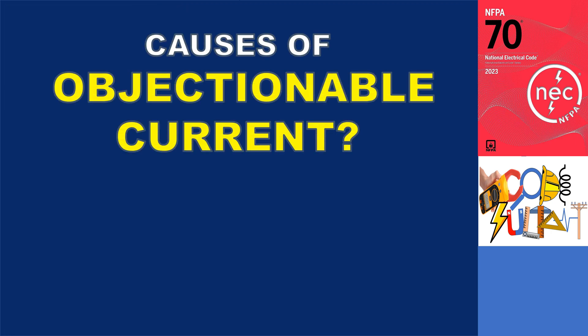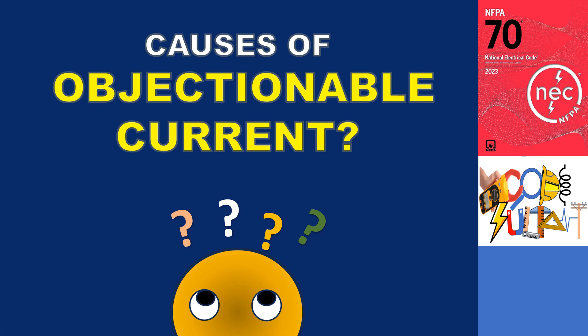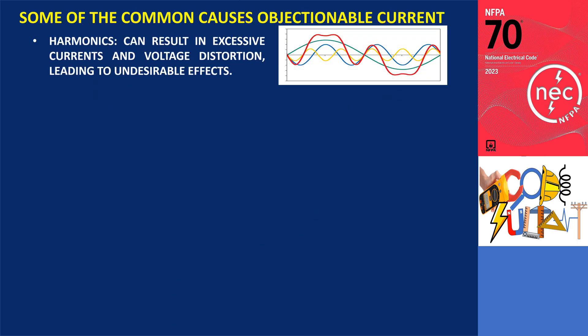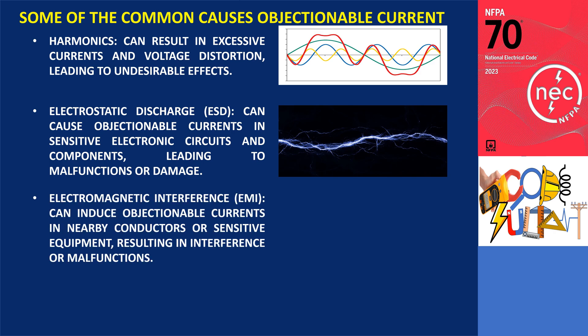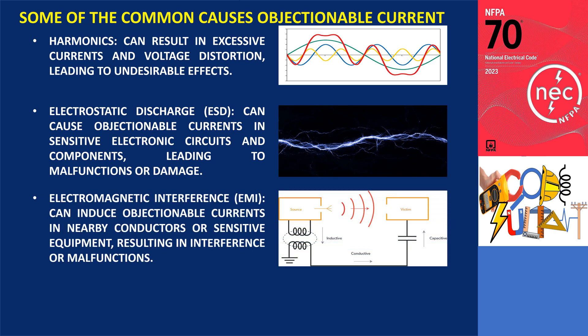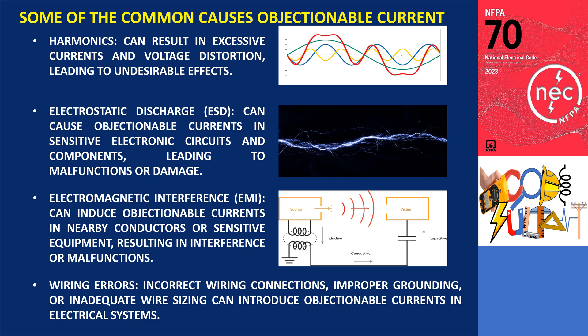Here are some factors that can cause objectionable currents in electrical systems. First, harmonics can result in excessive currents and voltage distortion, leading to undesirable effects. Second, electrostatic discharge can cause objectionable currents in sensitive electronic circuits and components, leading to malfunctions or damage. Electromagnetic interference can induce objectionable currents in nearby conductors or sensitive equipment, resulting in interference or malfunctions. The most common causes of objectionable current are incorrect wiring connections, improper grounding, or inadequate wire sizing, which can introduce objectionable currents in electrical systems.